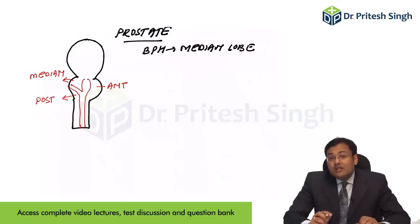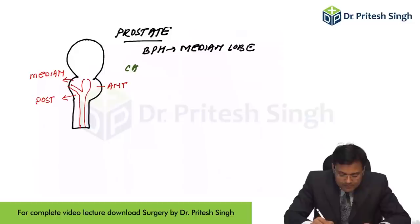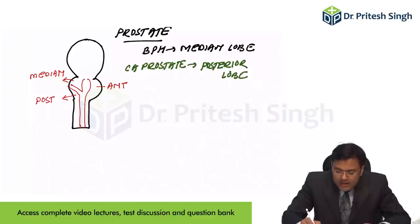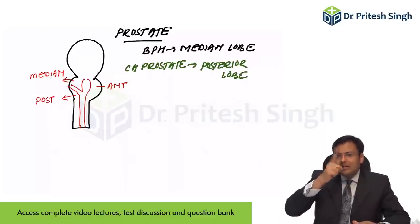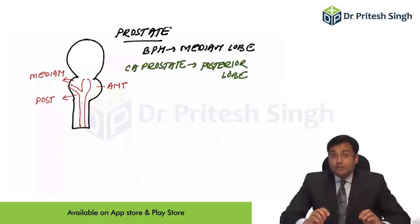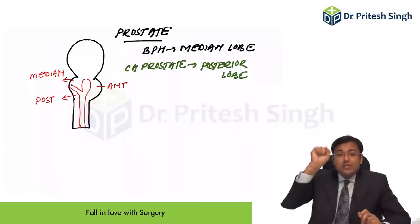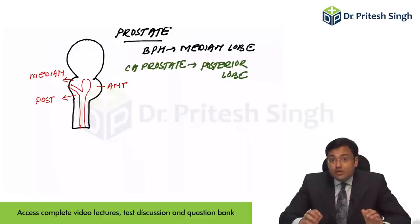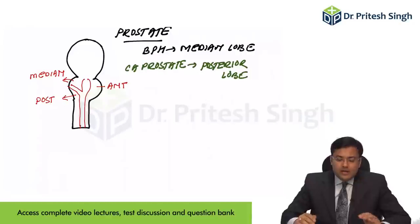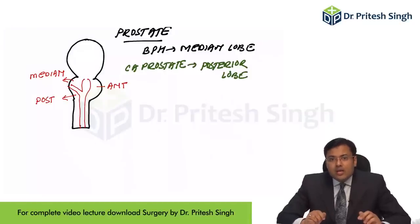Carcinoma prostate is most common in the posterior lobe. If we perform digital rectal examination, we mainly feel the posterior lobe and sometimes the median lobe when it is enlarged. So on digital rectal examination, the posterior lobe is felt and also the median lobe. This is the older classification, not used nowadays.